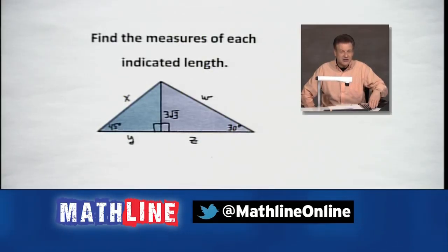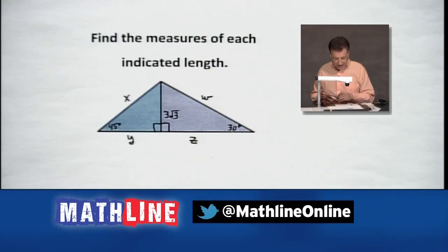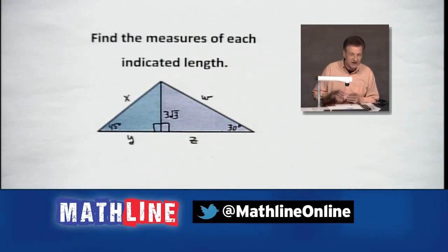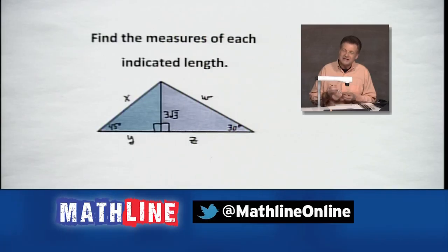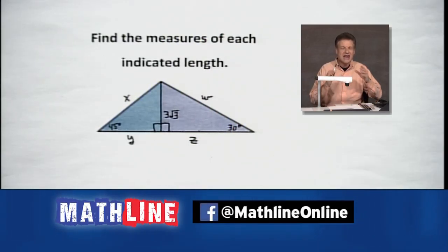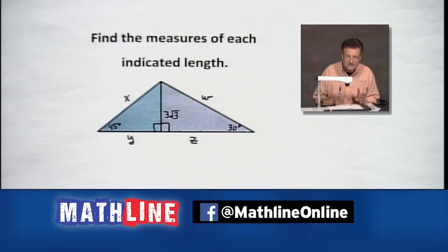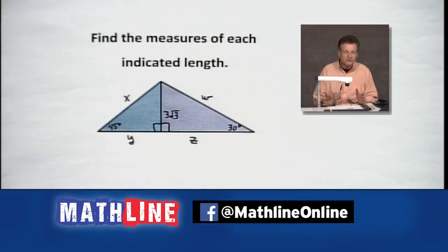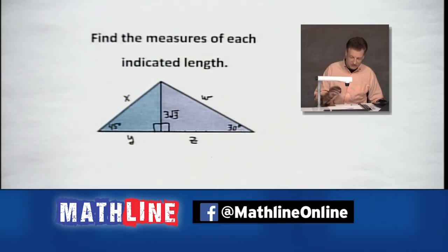Find the measures of each indicated length. Notice I put little variables there just in case you were wondering which ones we're going to be finding. Remember what I said — we might mix it up. We might put a 45-45-90 and a 30-60-90 in the same figure. That means the types of triangles we've got here based on angle measure.